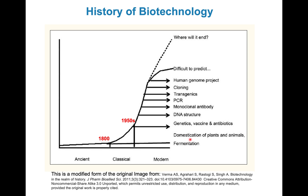Then between the 1800s and before the 1950s, we started domesticating plants and animals, breeding them and making better versions that would suit us better. We also studied genetics, and vaccines and antibiotics were developed. This is the classical era of biotechnology, and the modern era is a development of all these techniques.